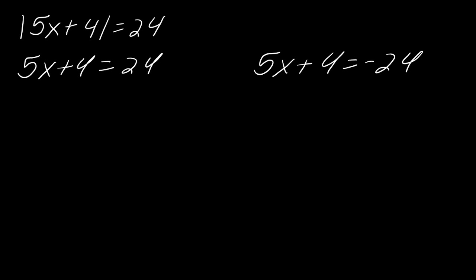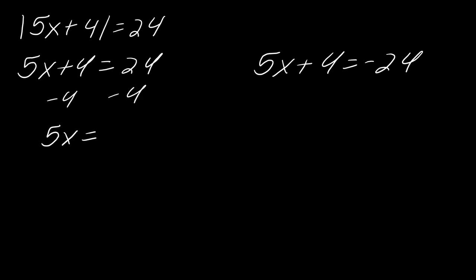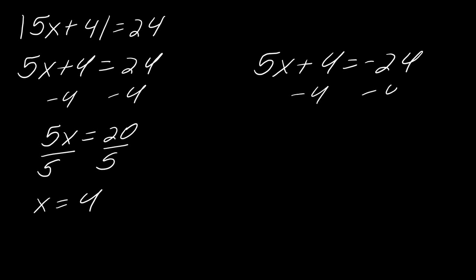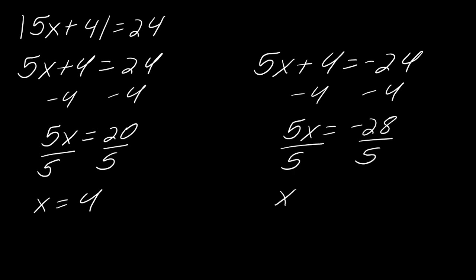So I'm going to set this up as 5x plus 4 equals 24, and 5x plus 4 equals negative 24. This makes sense because we're taking the absolute value — the absolute value of negative 24 is 24, which is why we break it into two situations. Now I just solve as usual: subtract 4, divide by 5 — x equals 4. For the other equation: 5x equals negative 28, divide by 5, and x equals negative 28 over 5.